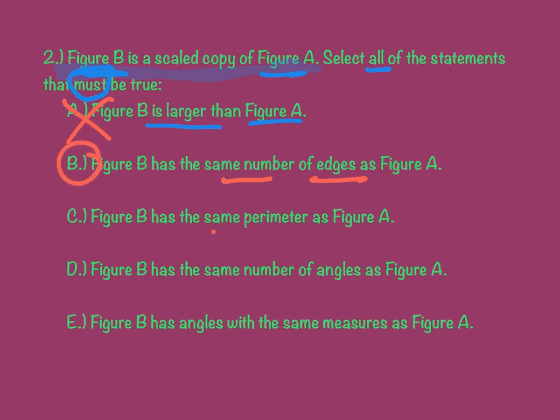Figure B has the same perimeter as figure A. Well, the same perimeter would be, the perimeter, remember, is like building the fence around it. And if it was the same always, like it had to be, that would mean it would always be a scale factor of one, which, that's not what this says. So, C also, no go, doesn't work. Figure B has the same number of angles as figure A. Well, that's really just like this one here. This one's the same number of edges, same number of angles. D works.